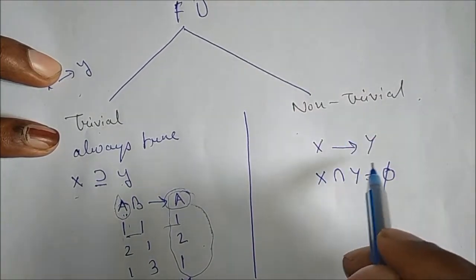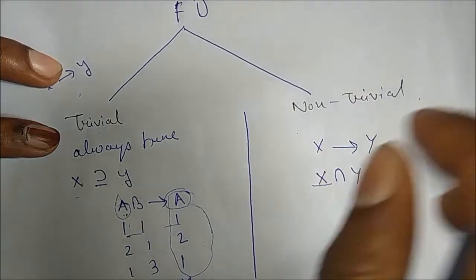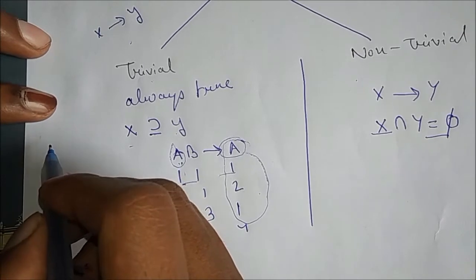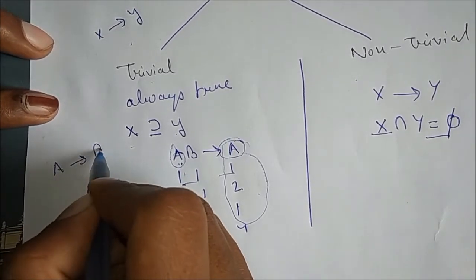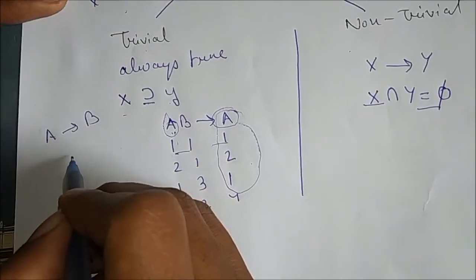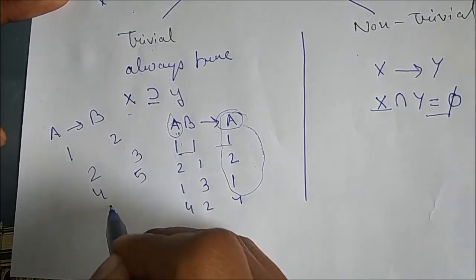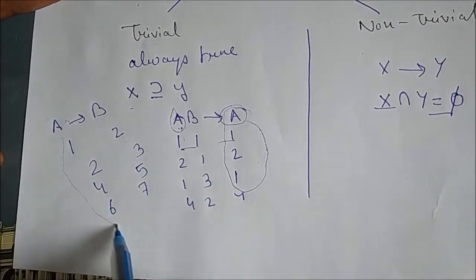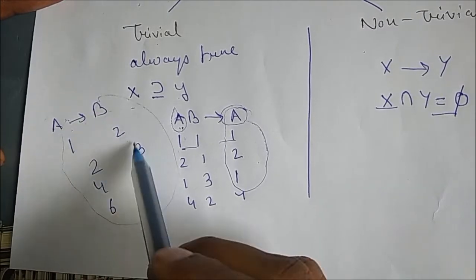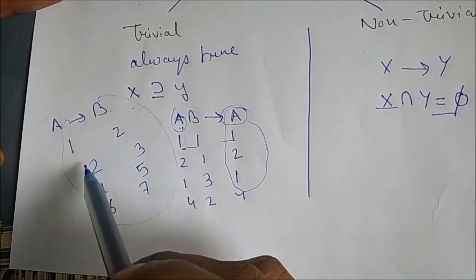It means the intersection will be Phi, meaning the null set. For example, in the non-trivial case: if A is a Functional Dependency on B, with values like 1,2 / 2,3 / 4,5 / 6,7 — it is a non-trivial Functional Dependency. Why? Because if A intersection B, we get nothing — the set will be Phi, because there is nothing that matches.